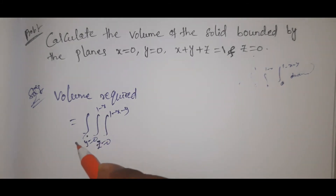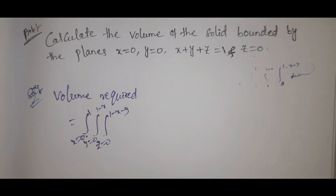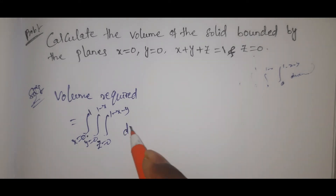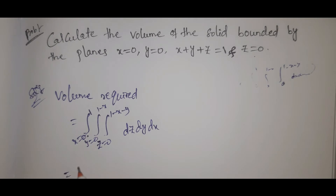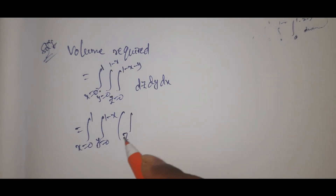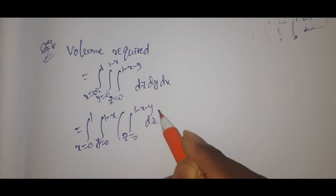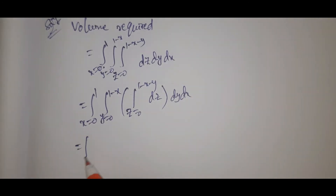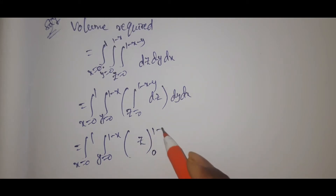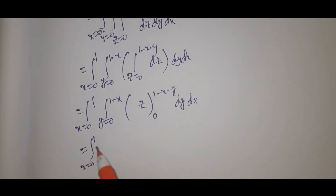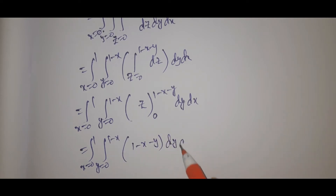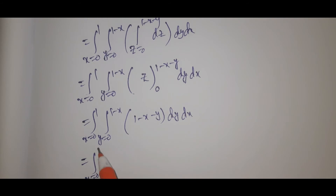So we have the integral: x equal to 0 to 1, y equal to 0 to 1 minus x, integral z equal to 0 to 1 minus x minus y, dz dy dx. Evaluating the inner integral gives us: x equal to 0 to 1, y equal to 0 to 1 minus x, then 1 minus x minus y, dy dx.